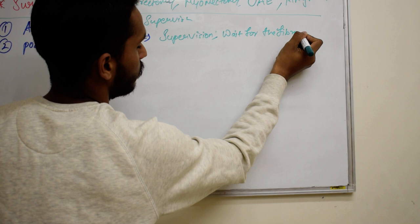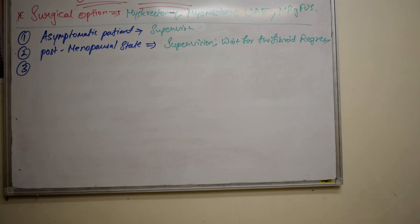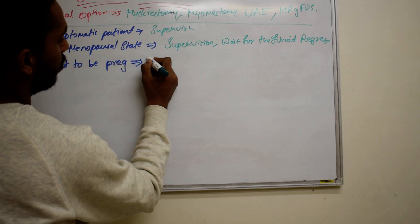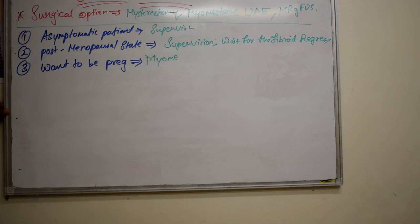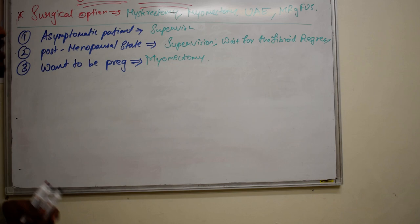If we have a patient who has a desire for pregnancy, we can go for myomectomy — we will preserve the uterus and remove the part of the muscle with the fibroid. The chances of getting a normal pregnancy after this is 40 to 60%.